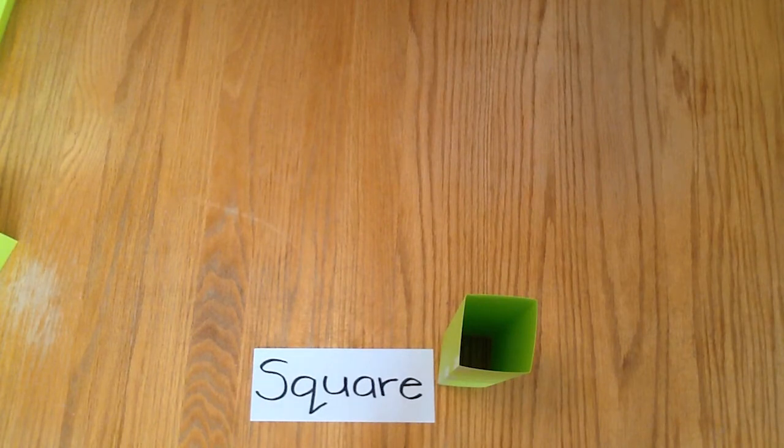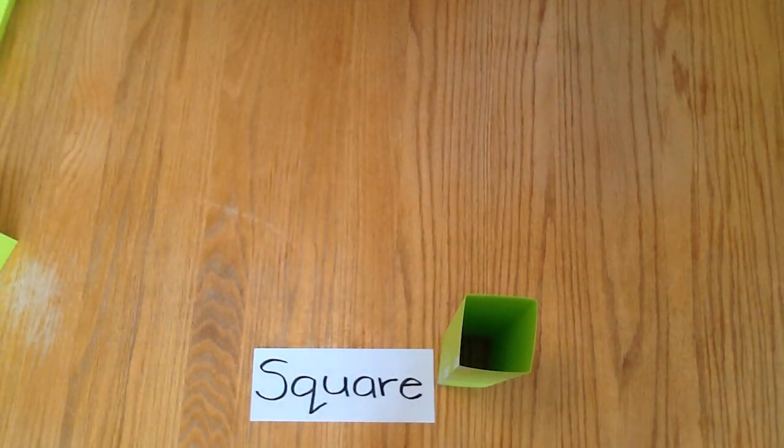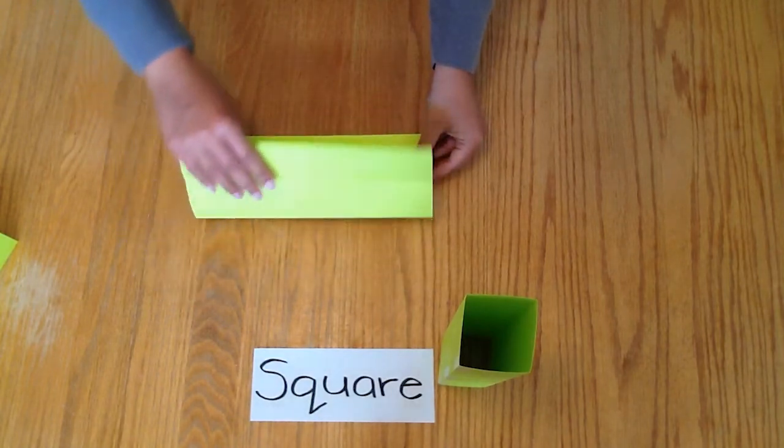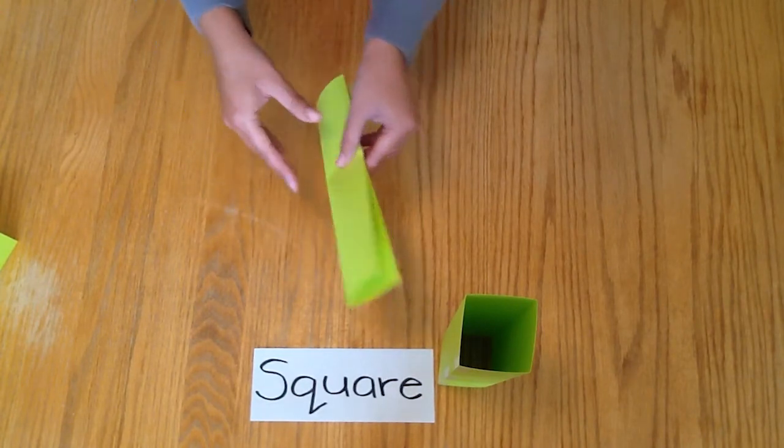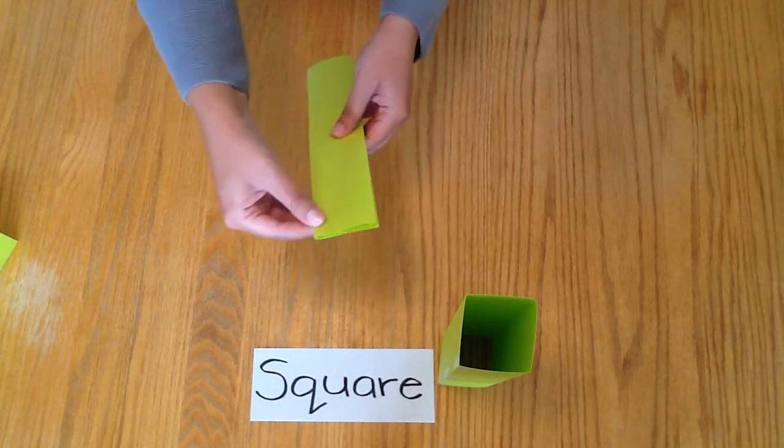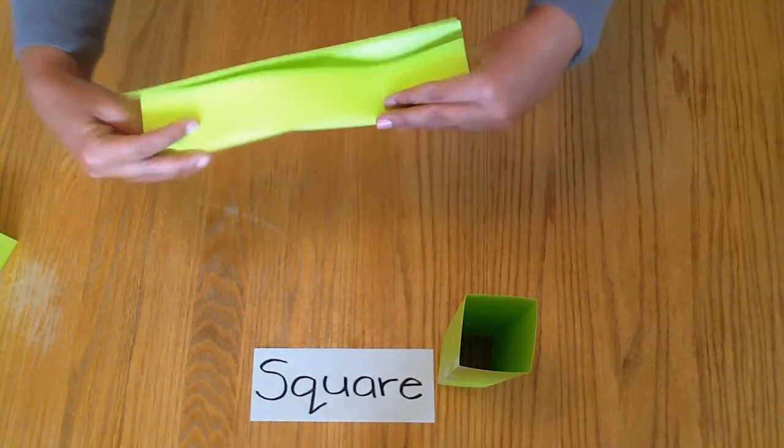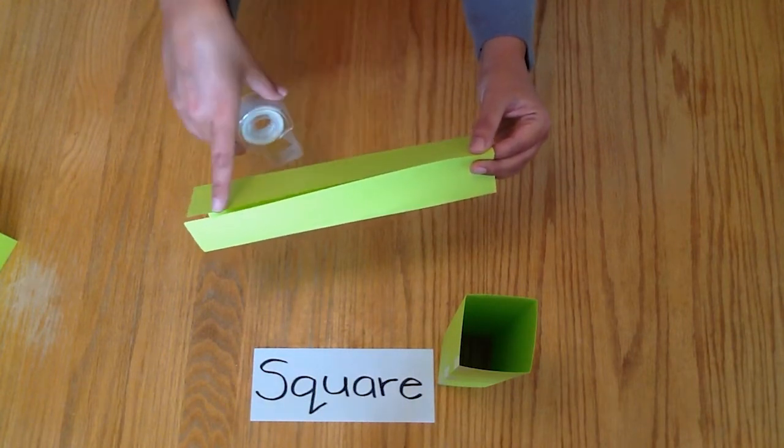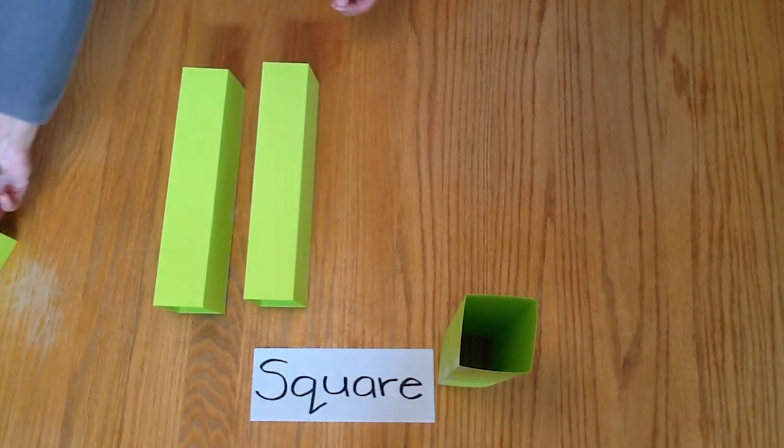We will begin with making the square paper columns. Take your piece of paper and follow my folding instructions. Place your piece of paper like this. Fold the paper into quarters. Make sure all edges are creased. Take your piece of paper and fold, unfold, and take your tape and secure the edges of your column. Repeat this until you have a total of four square columns.